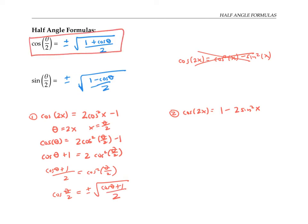I can carry a similar process out with the second formula. I'll substitute theta for two x, which means that x is theta over two. That gives me cosine theta is one minus two sine squared theta over two.